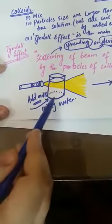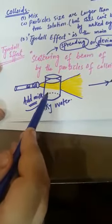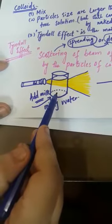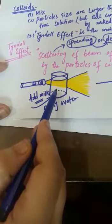So what happens if we look at this example? Then we have a container, in this container we have water. Suppose you have to add some milk, so the milk is a colloid. The particle size is bigger.